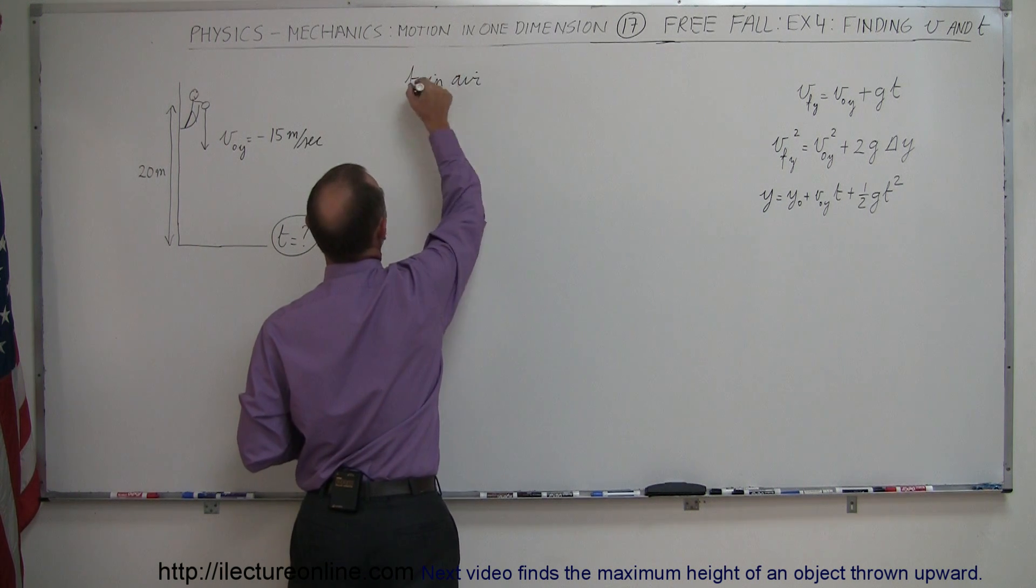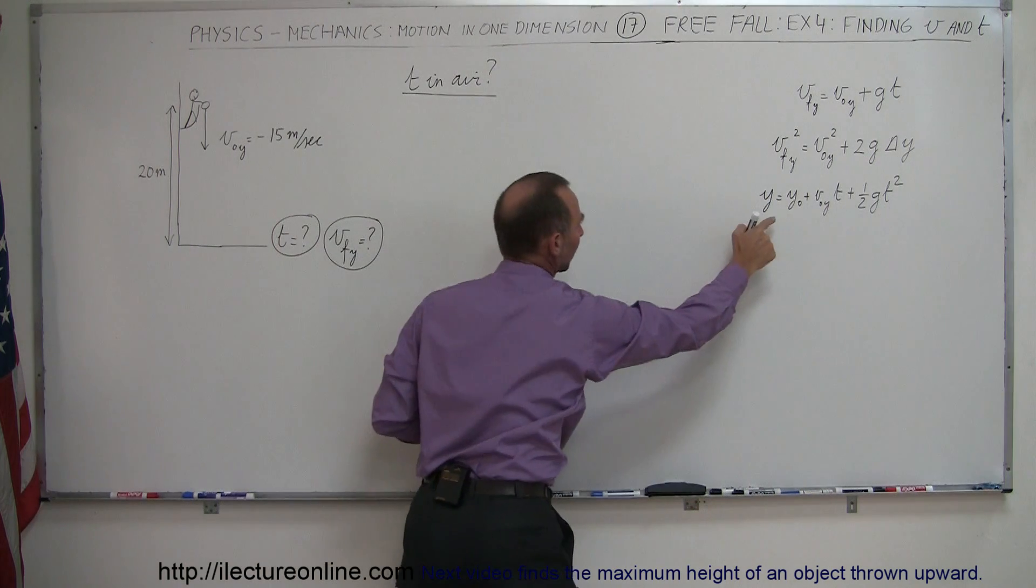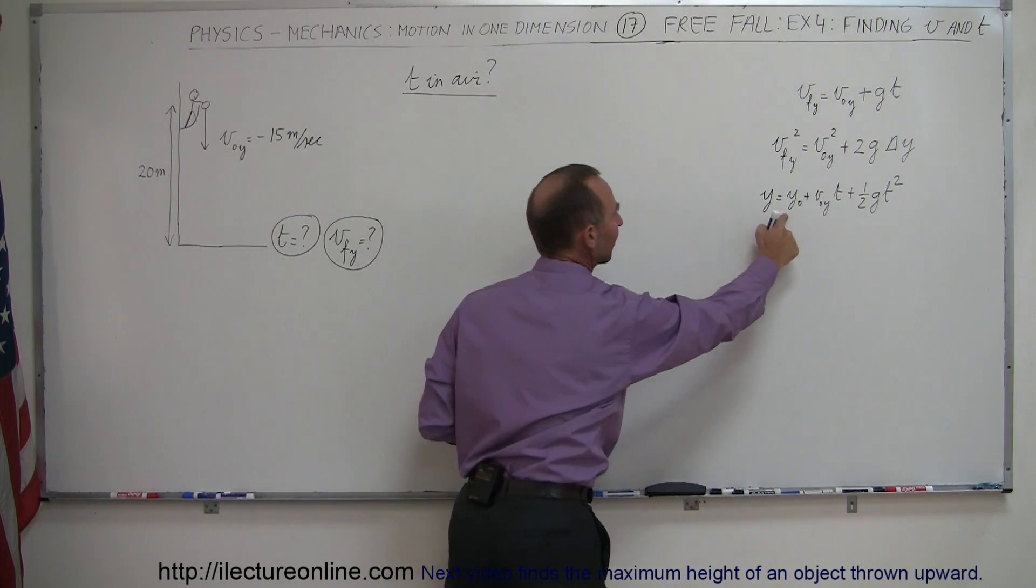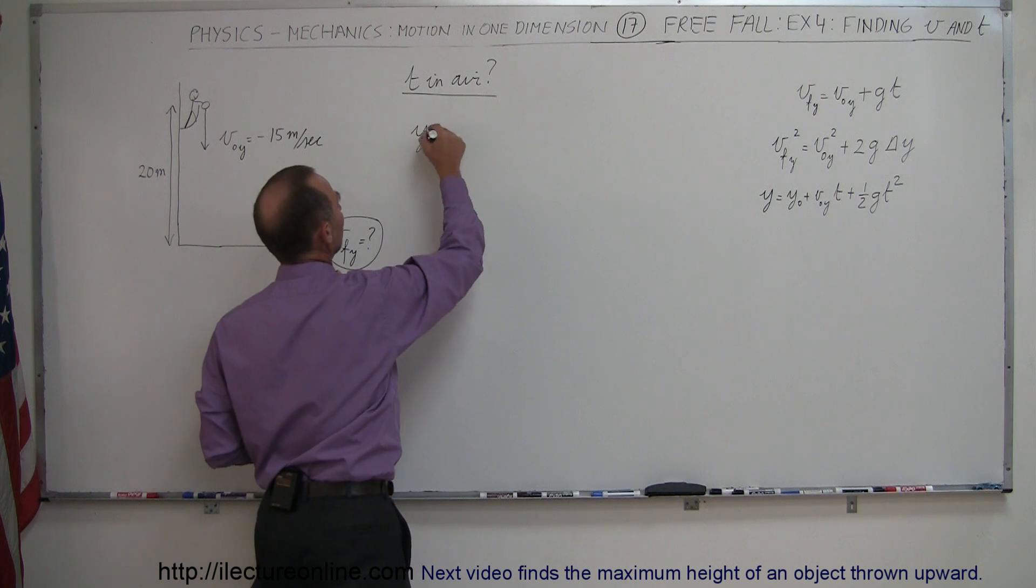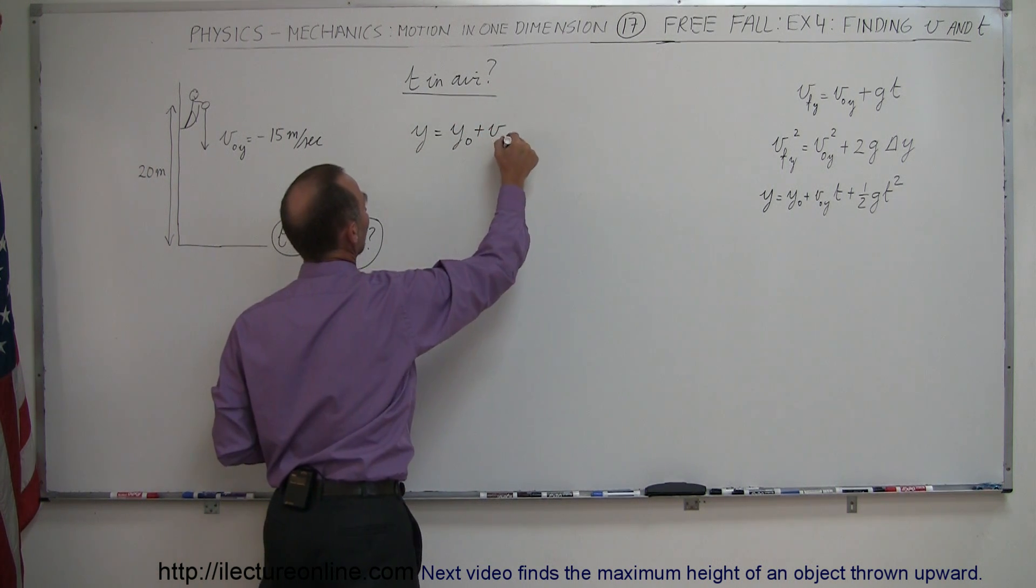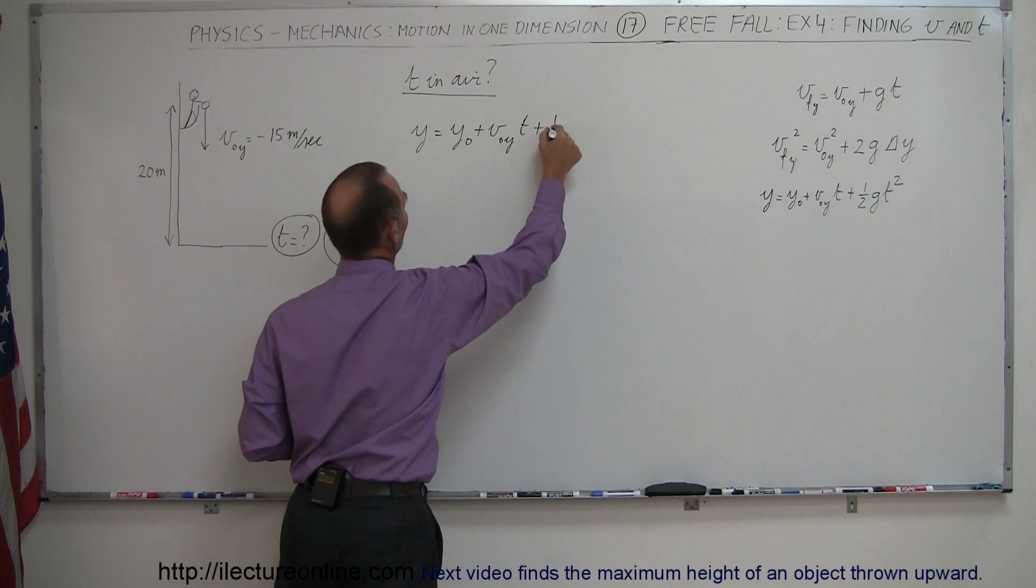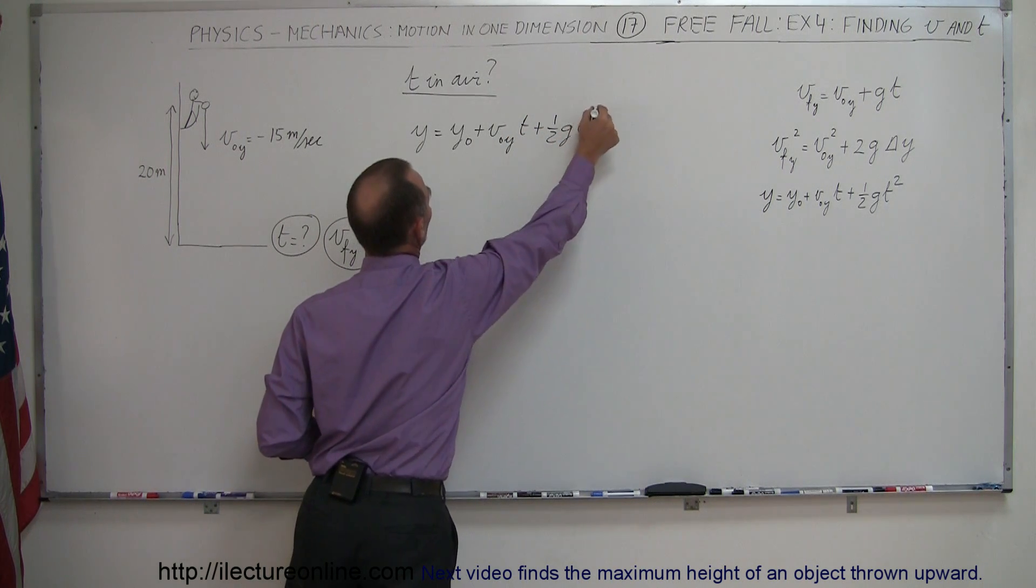We're going to use the third equation, this one right here, because that has height and time at the same time. So we have y equals y initial plus v initial in the y direction times time plus one-half g t squared.